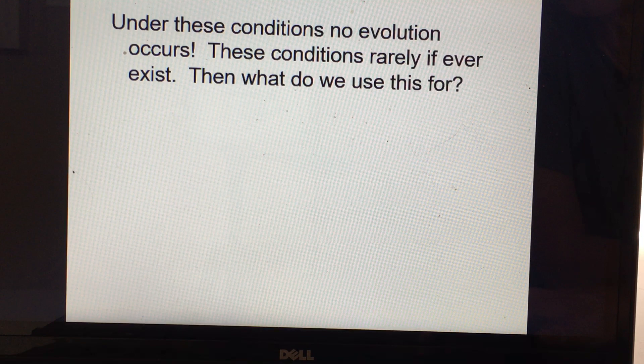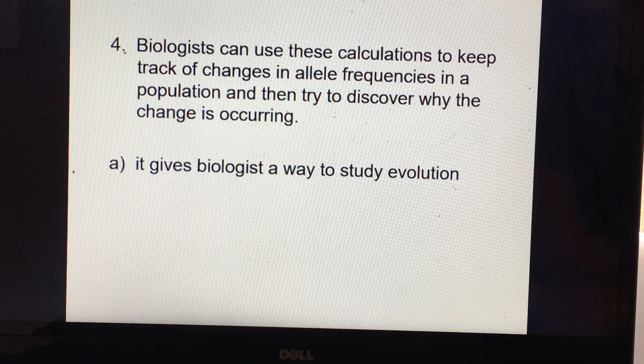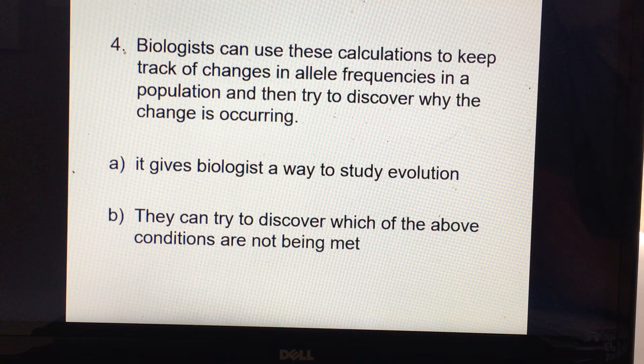These conditions rarely, if ever, exist. So why do we talk about Hardy-Weinberg equilibrium if it can't happen? Well, biologists use these calculations to keep track of changes in allele frequency in a population, and then they try to discover why the change is occurring — they look for shifts and then try to figure out what's causing them. It gives biologists a way to study evolution by figuring out which of the five conditions are not being met. For example: does a new allele help the organism survive and reproduce? Or are organisms entering or leaving the population? So it's a jumping-off point for biologists.